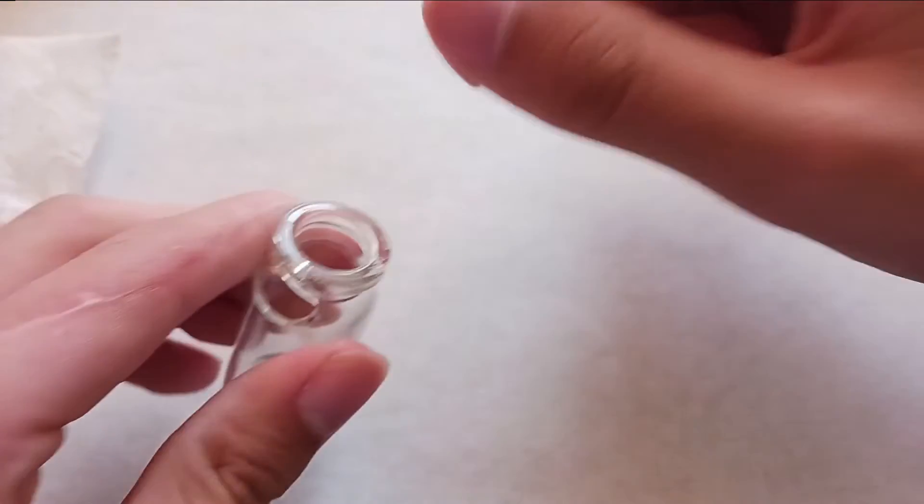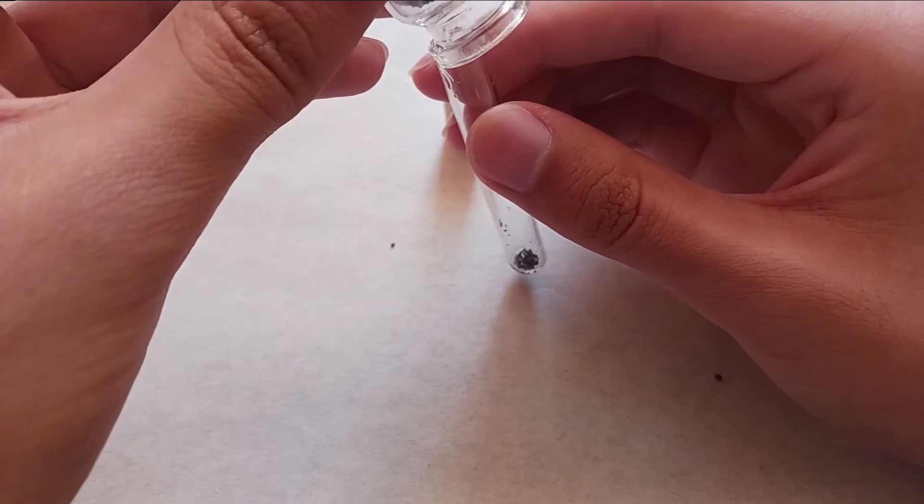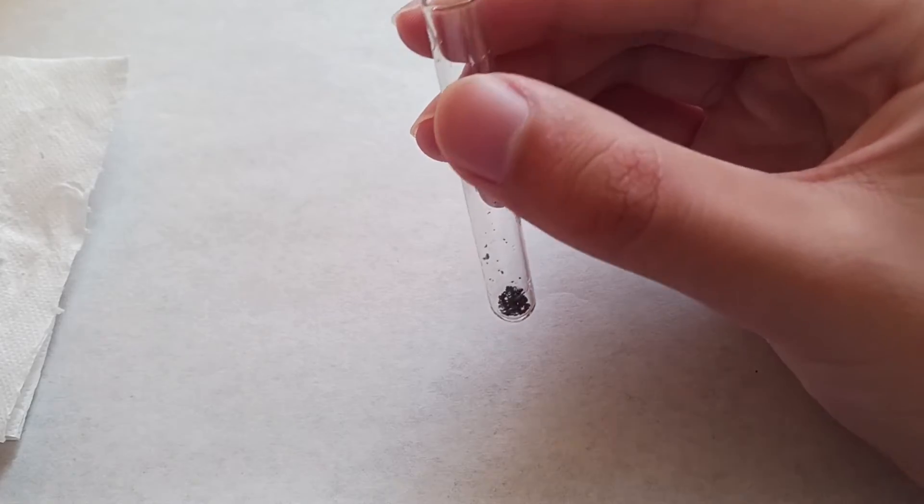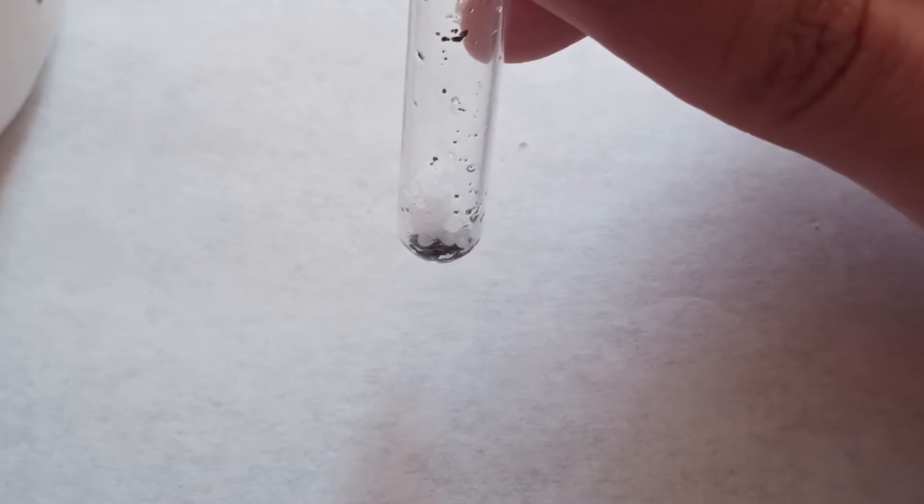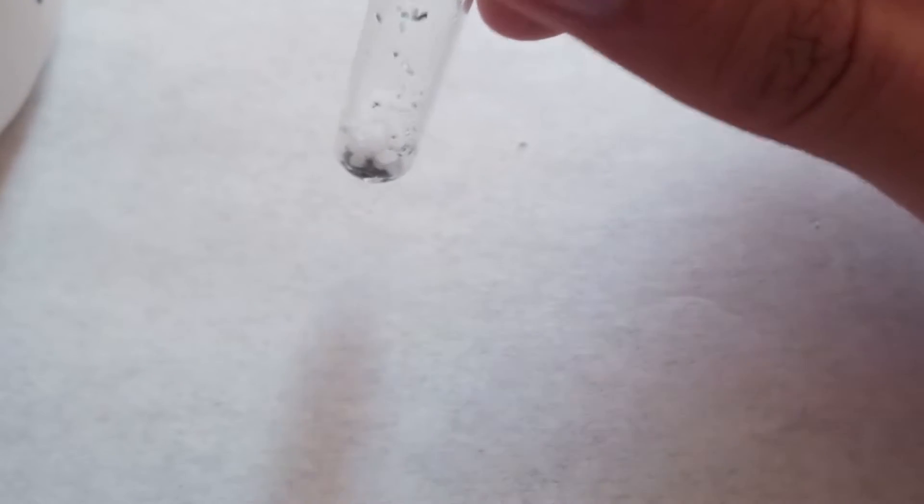Anyway, to the manganese metal that I've obtained from a previous video, I added the sodium nitrate. Then, add the sodium hydroxide. And to be perfectly honest, you don't need to measure this out, you can just eyeball it.